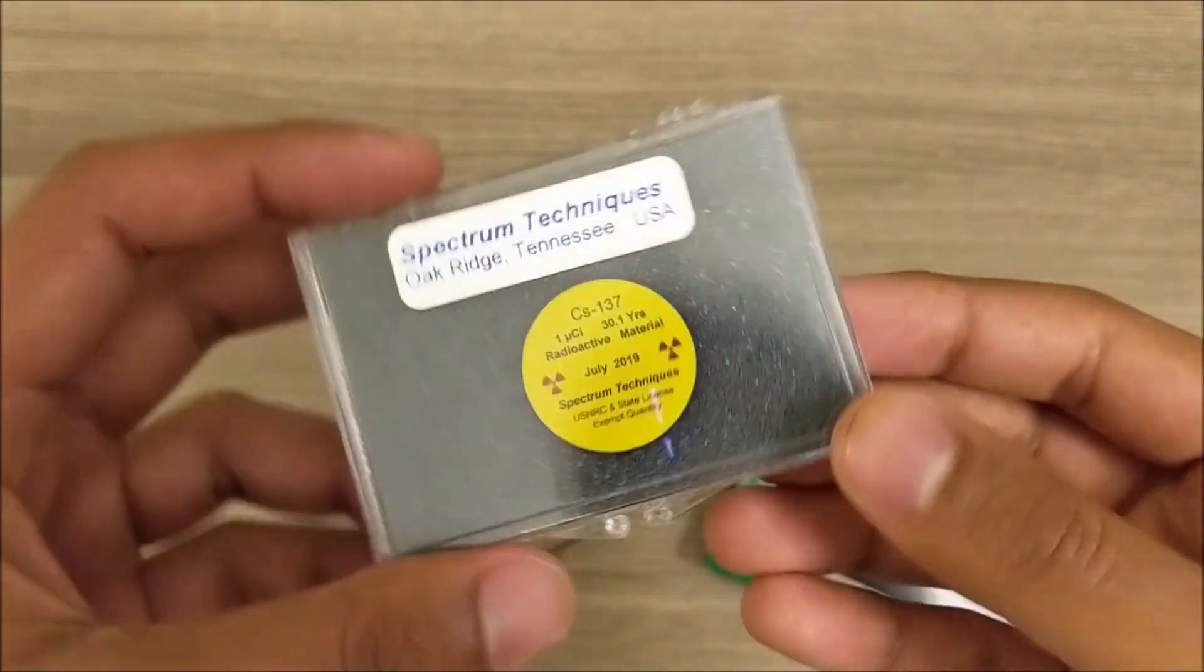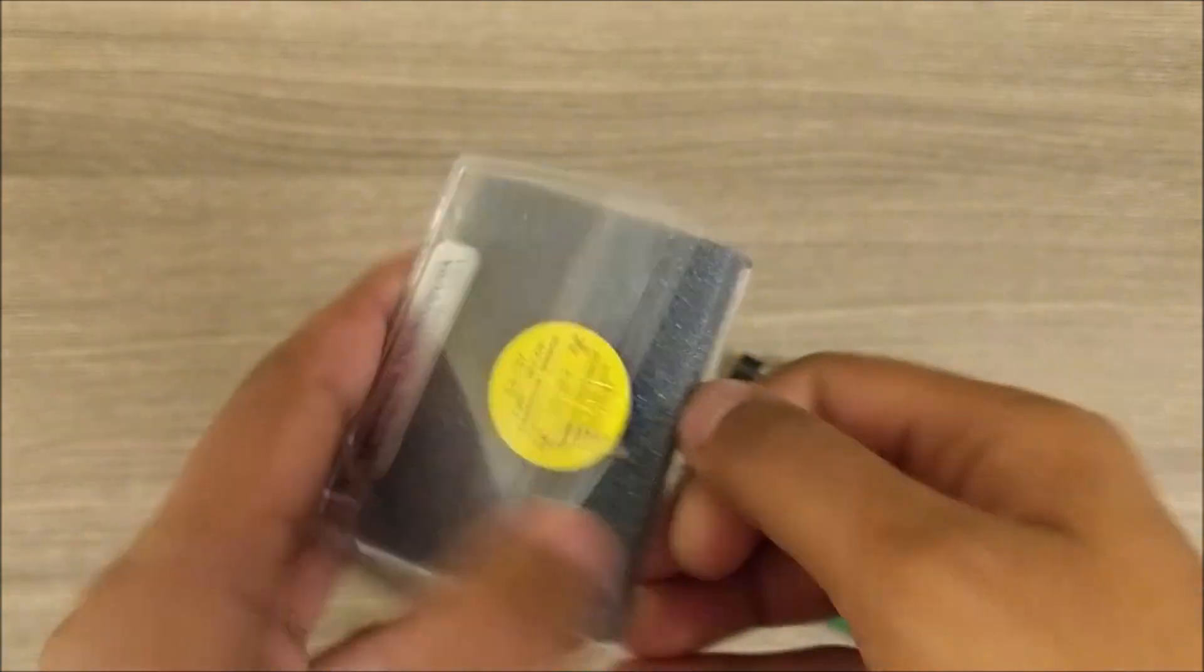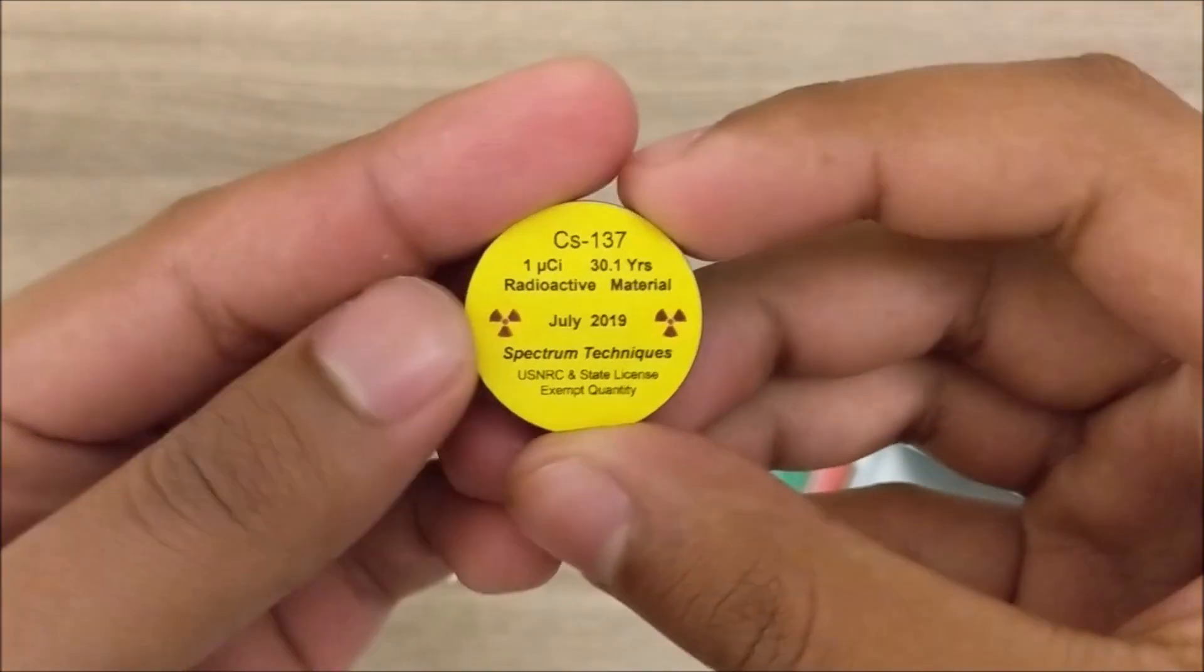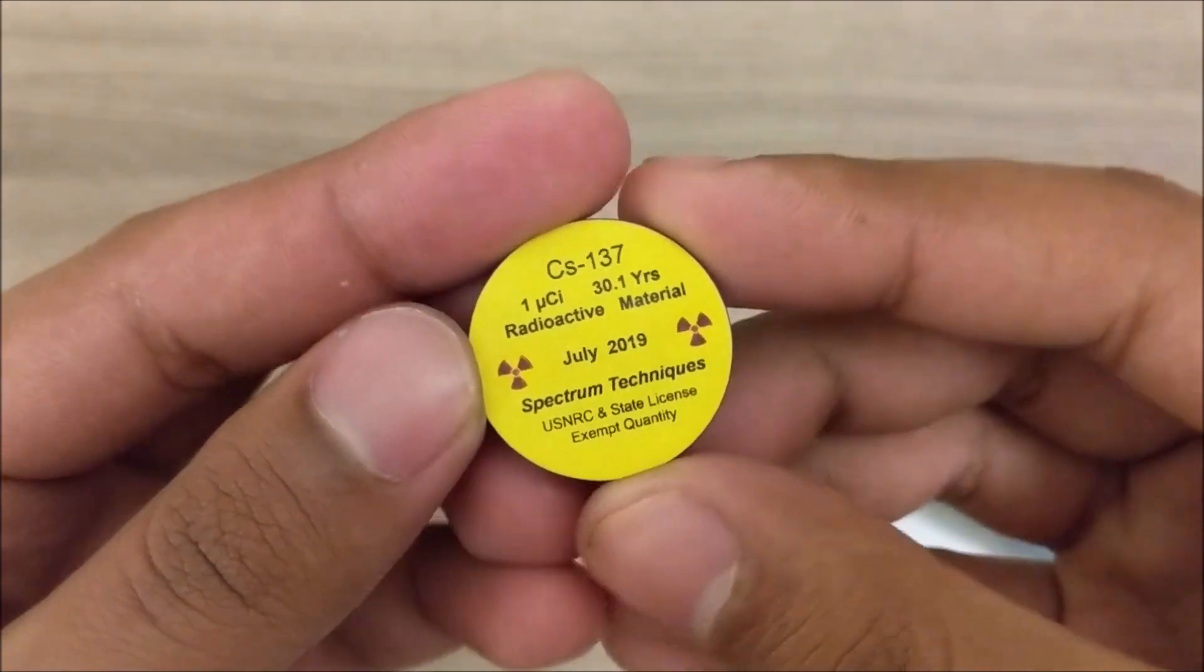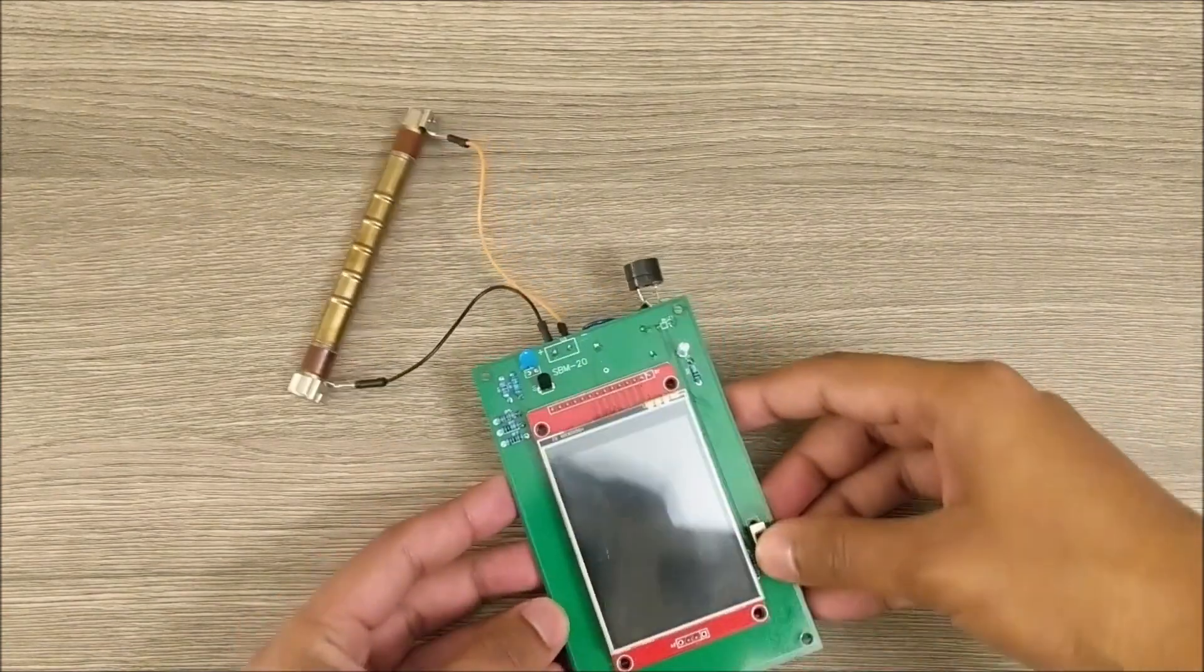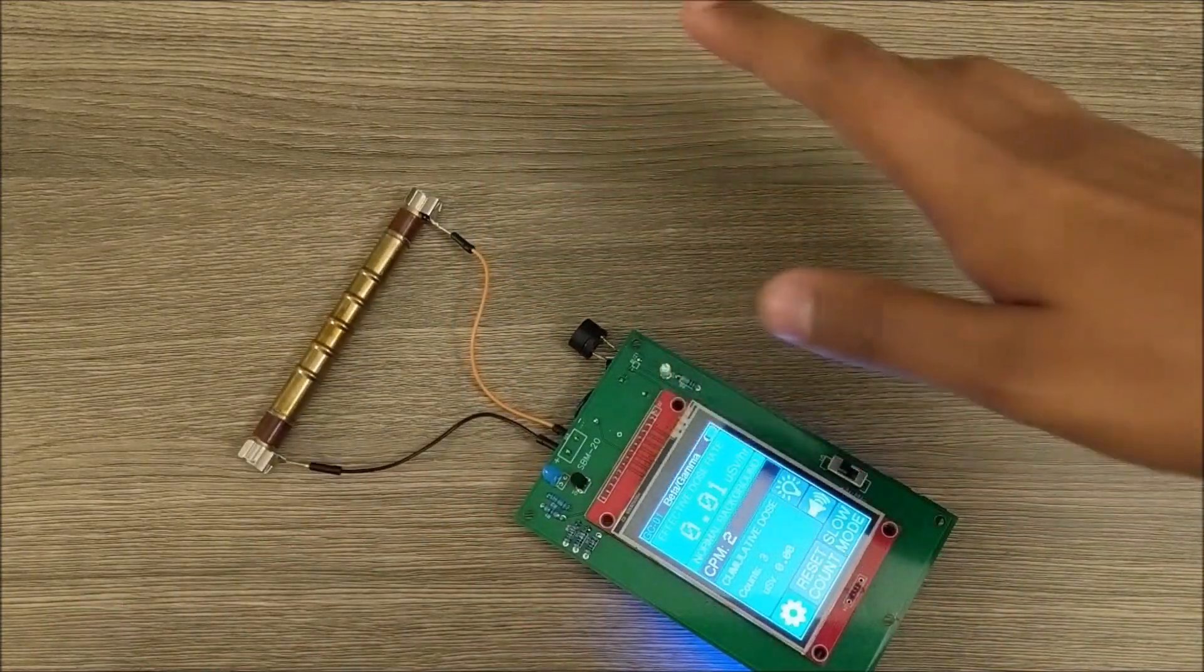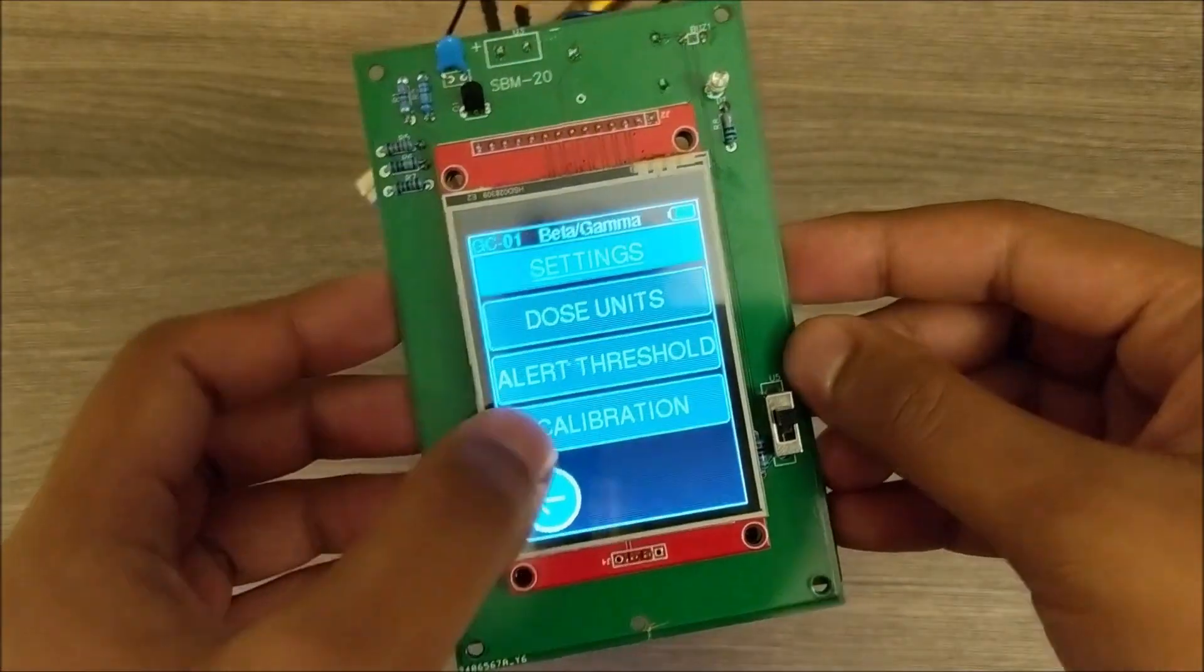Got this in the mail today from Oak Ridge, Tennessee. This is a disk source of cesium-137, one microcurie of it, and I'm going to use it to calibrate my Geiger counter. You can see I've taken it out of the box and the Geiger tube is fully exposed. There are no instructions, and by calibrate I just mean finding the conversion factor.